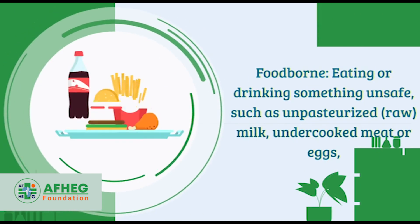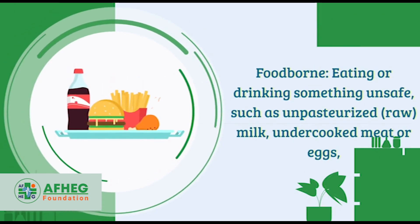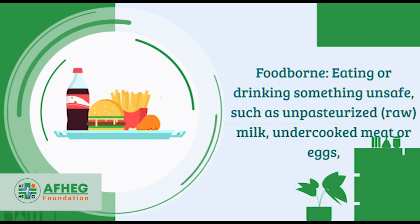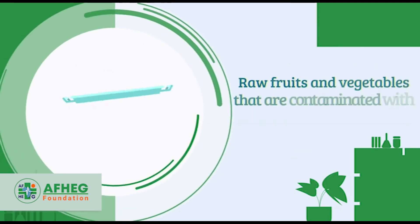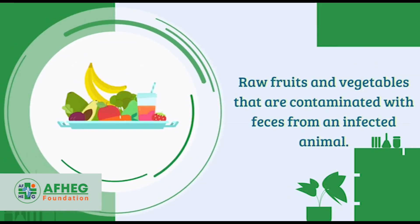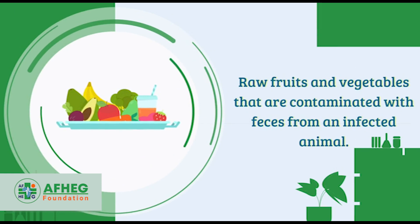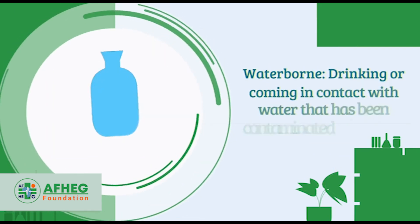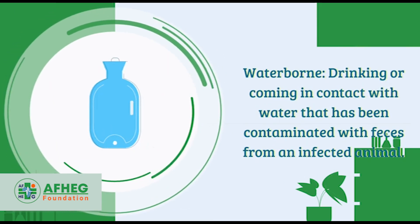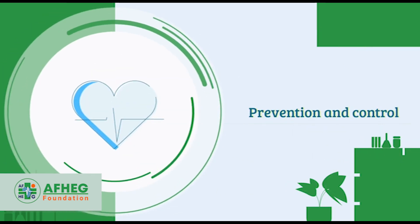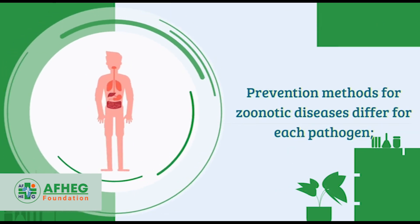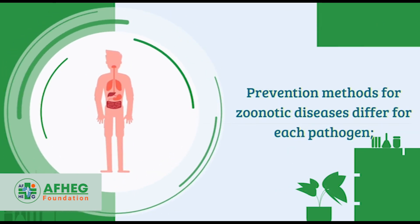Other transmission routes include vector-borne — being bitten by a tick or an insect like a mosquito or flea — foodborne — eating or drinking something unsafe such as unpasteurized raw milk, undercooked meat or eggs, or raw fruits and vegetables contaminated with feces from an infected animal — and waterborne — drinking or coming into contact with water contaminated with feces from an infected animal.